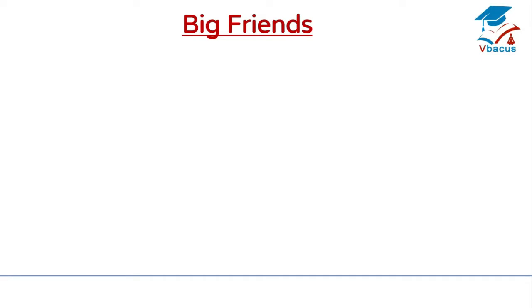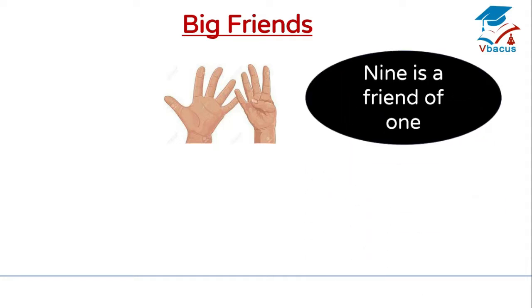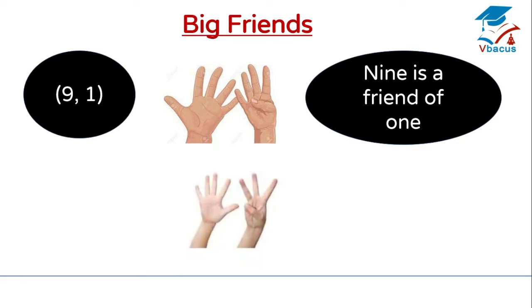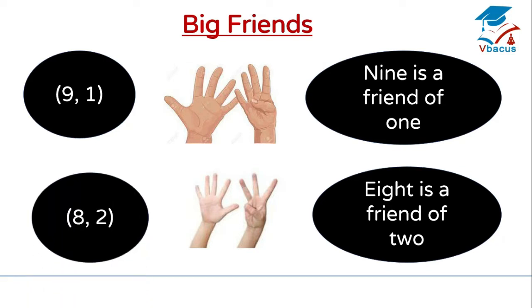Friends, how many fingers do you have in both hands? 10. How many fingers are closed? 1. How many fingers are opened? 9. So 9 is a friend of 1. We can write it as 9, 1. How many fingers are closed? 2. How many fingers are opened? 8. So 8 is a friend of 2. We can write it as 8, 2.